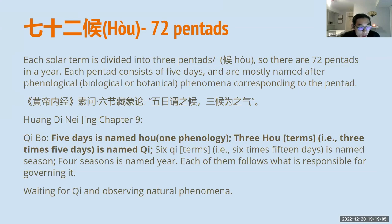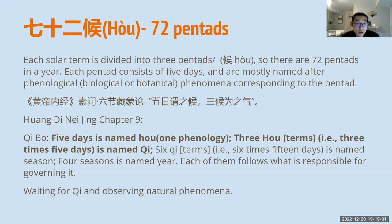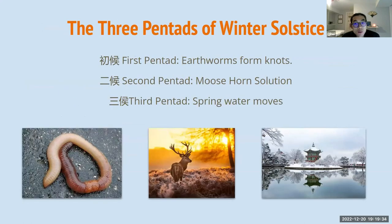The qi shi er hou — the 72 pentads — literally means we need to wait for the qi and observe natural phenomena. The phenomena are either biological or botanical. Let's take a look at the three pentads of the winter solstice. The first pentad is earthworms form knots. The second pentad is moose horn solution. The third pentad is spring water moves.